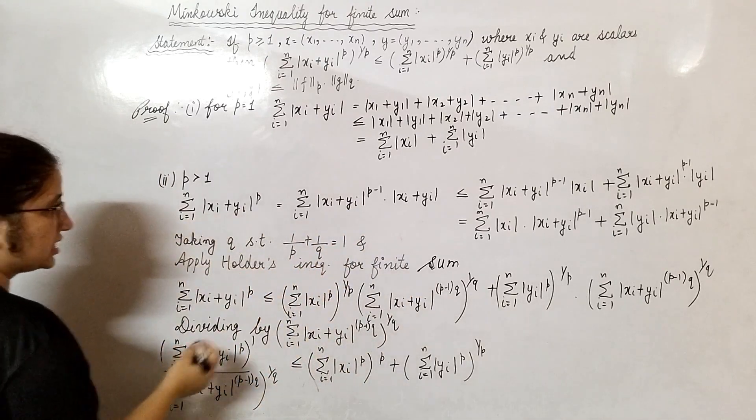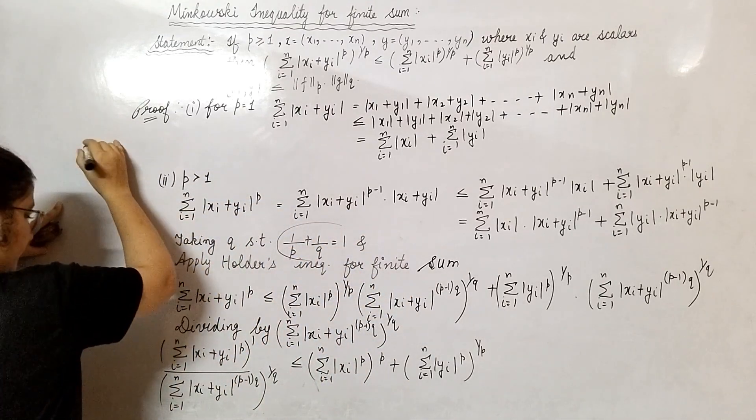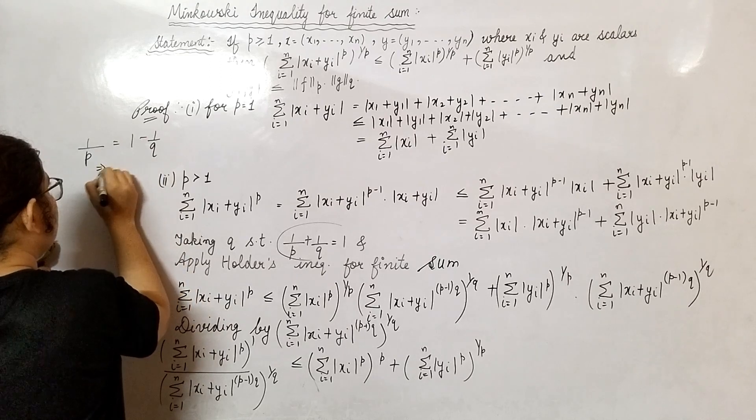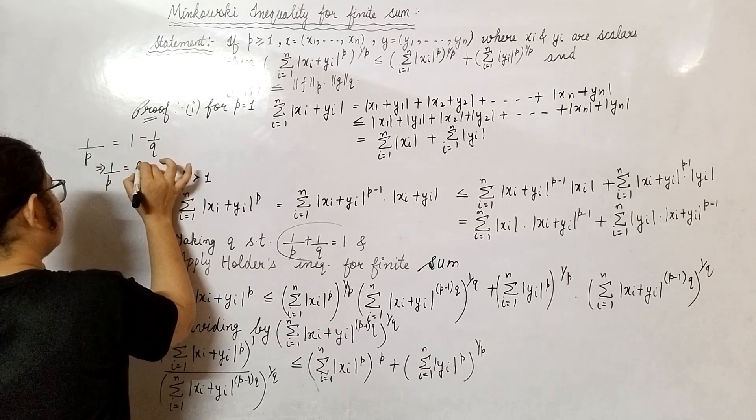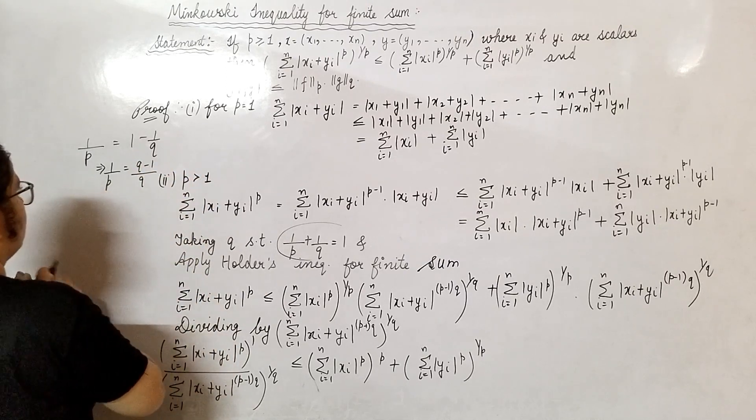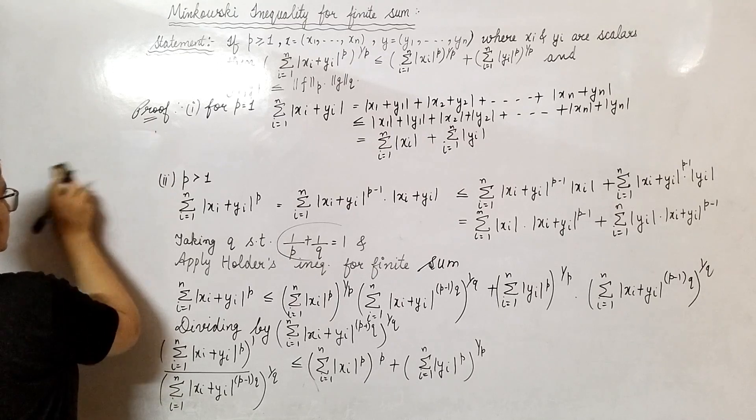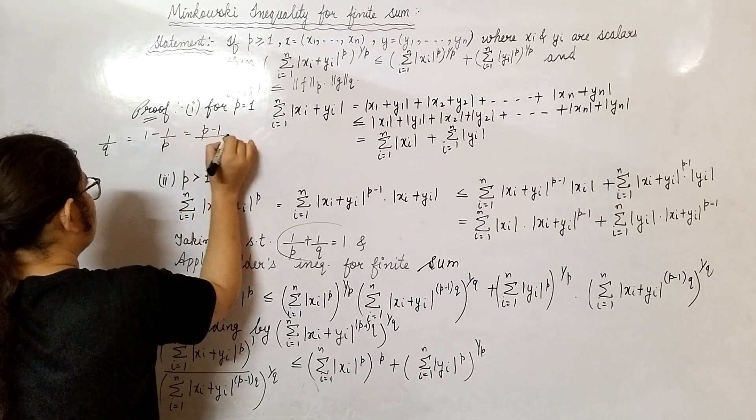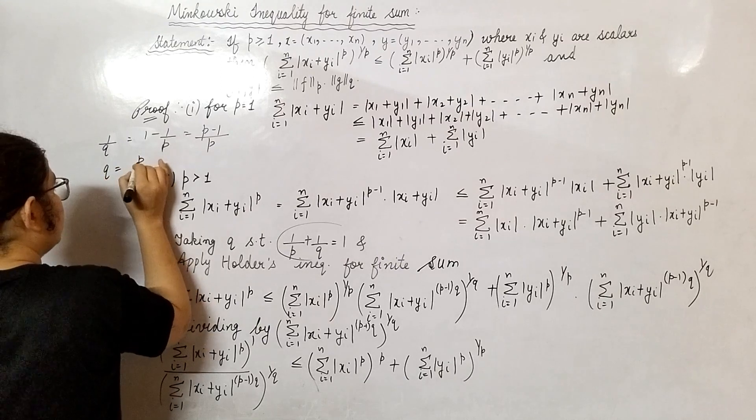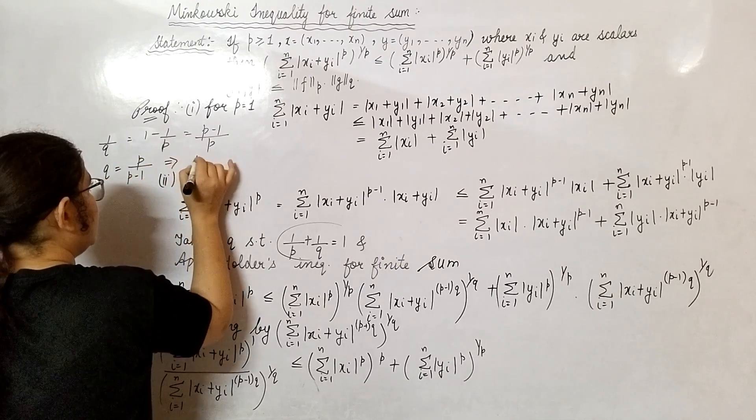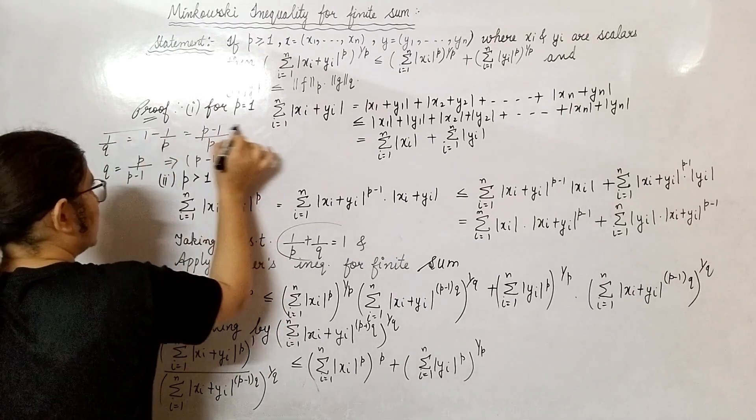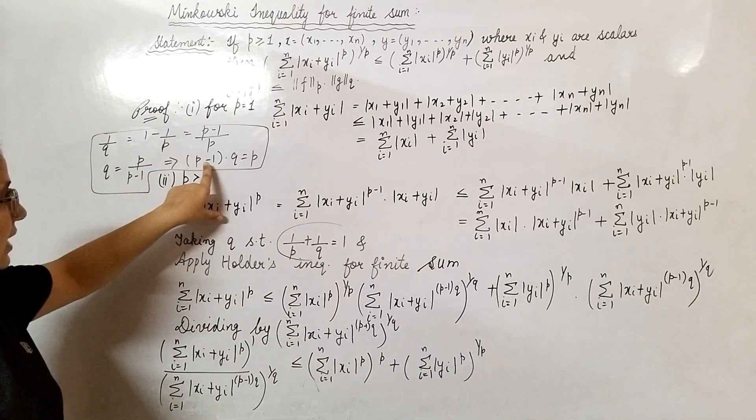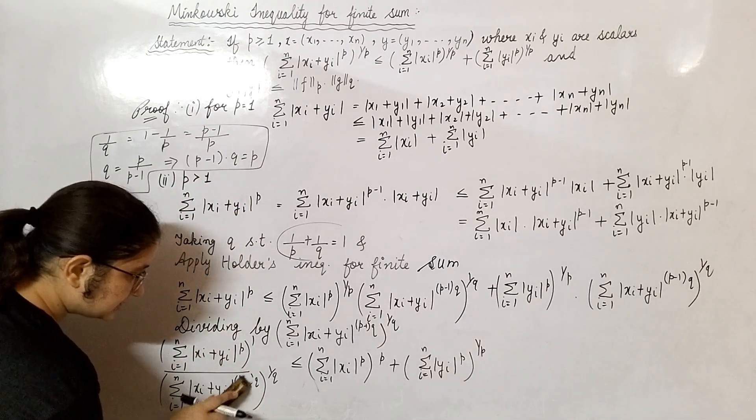Now see, I have taken q such that this is going to hold. Now from here, 1/p equals to 1 minus 1/q. This implies 1/q equals to (p-1)/p. q equals to p/(p-1). This implies (p-1)·q equals to p. Look at this very carefully.